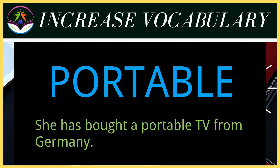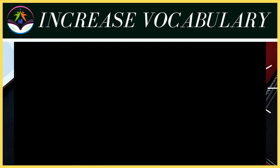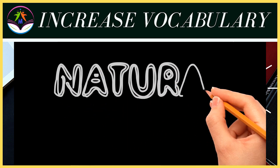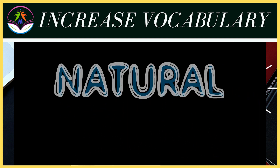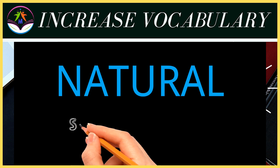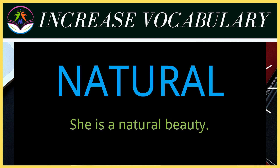That means jo bahut light weight ho. The fifth word is 'natural', spelled N-A-T-U-R-A-L. The meaning of natural is prakartik. Now let's see how we can use it in a sentence: She is a natural beauty. Woh prakartik roop se sundar hai.